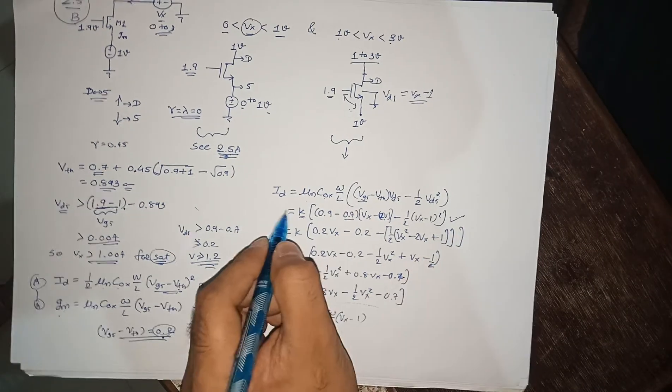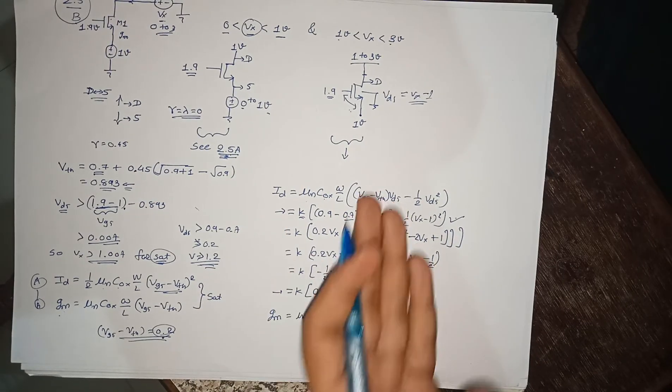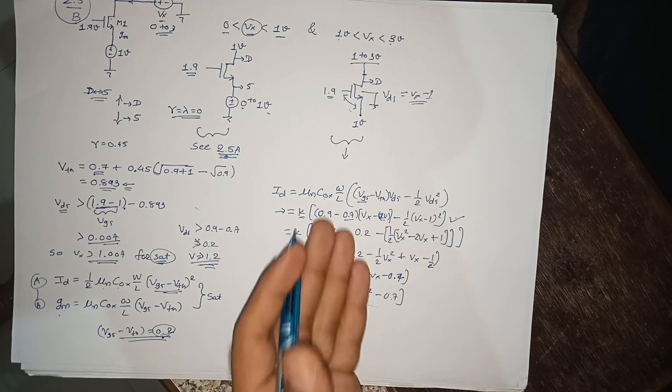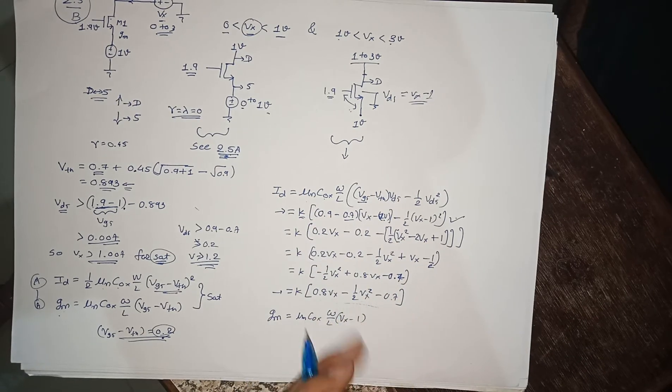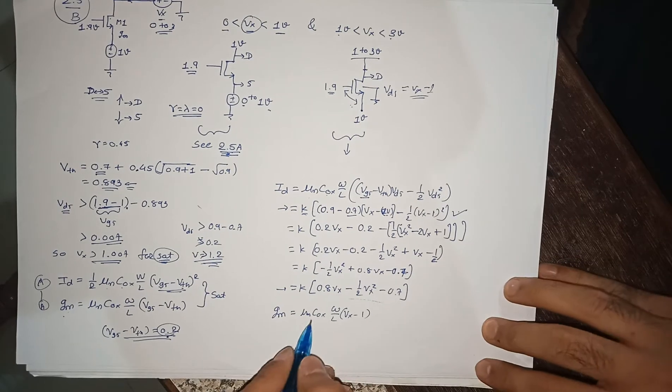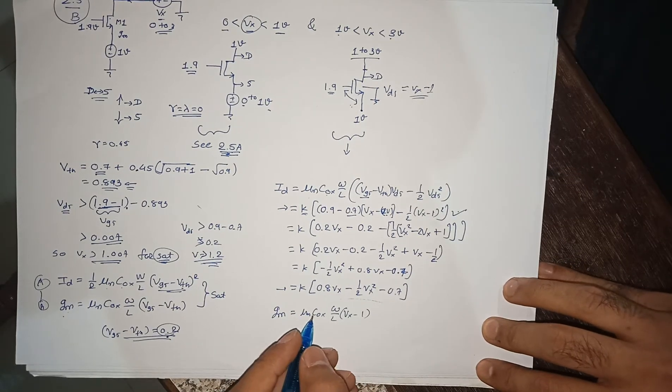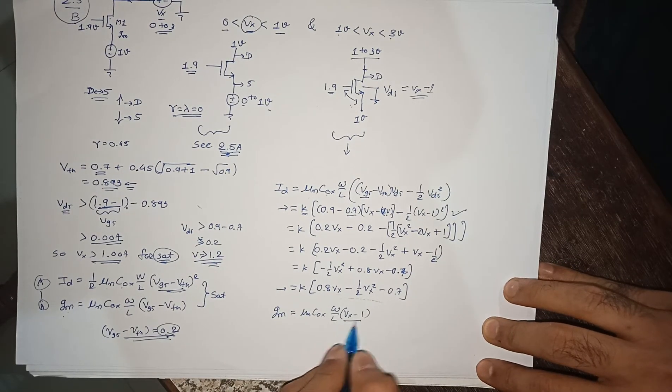You can use this equation. You can use MATLAB also for value of this ID with respect to VX. Your equation of gm is μn Cox W over L times VDS, that is VX minus 1. This is for triode or linear.